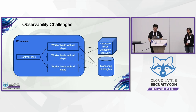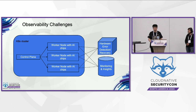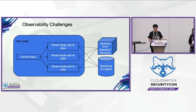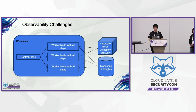Today, we will focus on the observability of ML workloads in Kubernetes and how AI chips fit into this framework. We will summarize the observability challenges of running machine learning workloads in Kubernetes with AI chips into two main classes. The first class, as shown in the diagram, involves the detection and recovery of hardware issues in today's AI chips.